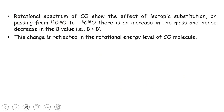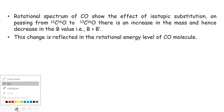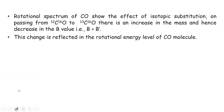For example, the rotational spectrum of carbon monoxide shows the effect of isotopic substitution on passing from ¹²C¹⁶O to ¹³C¹⁶O. In ¹³C¹⁶O the mass is larger, so B decreases, since B is inversely proportional to I, and I is related to the reduced mass. Therefore B(¹²C¹⁶O) > B(¹³C¹⁶O). This change is reflected in the rotational energy levels of the CO molecule.